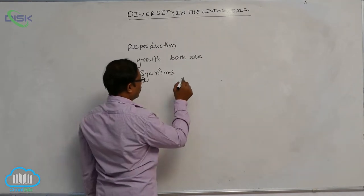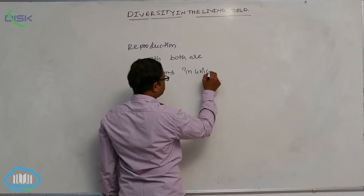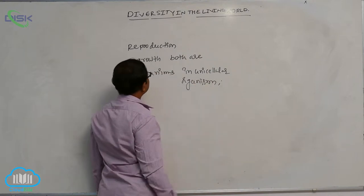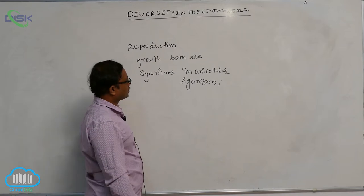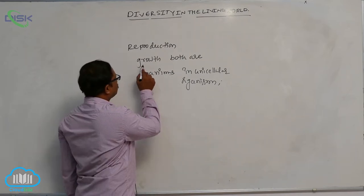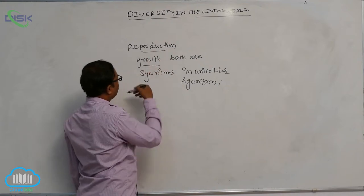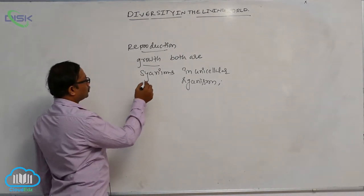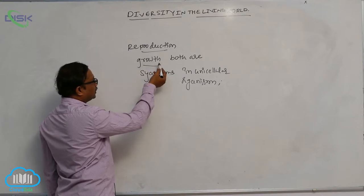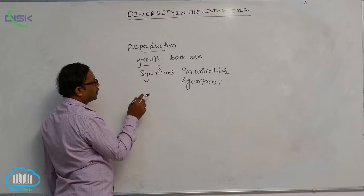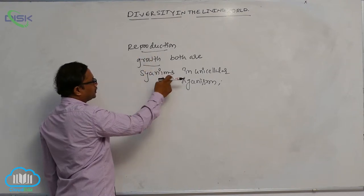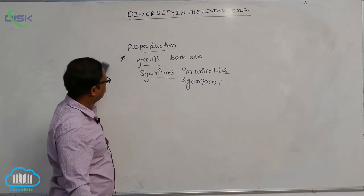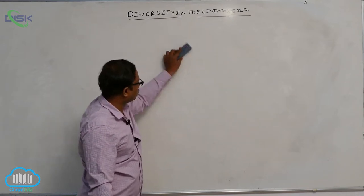In unicellular organisms, reproduction and growth are both synonymous — we cannot differentiate which one is growth and which one is reproduction. In unicellular organisms, reproduction takes place by cell division, and growth occurs before cell division as an increase in size. That's why we cannot differentiate growth and reproduction in unicellular organisms.